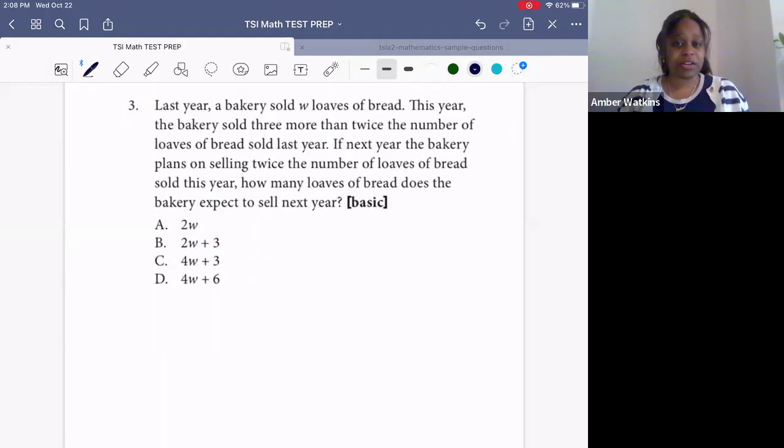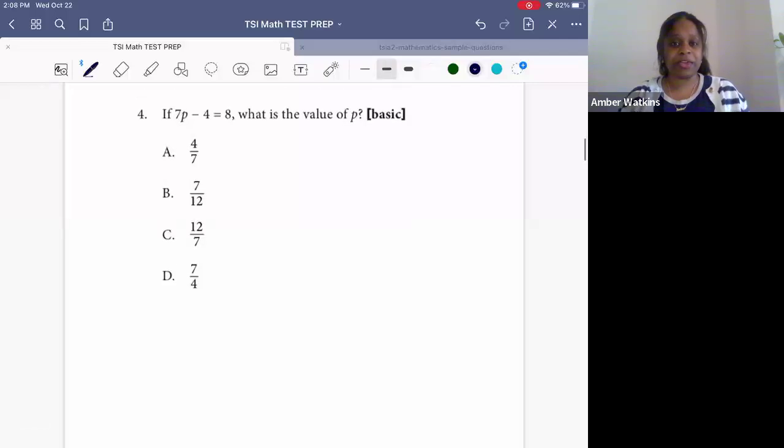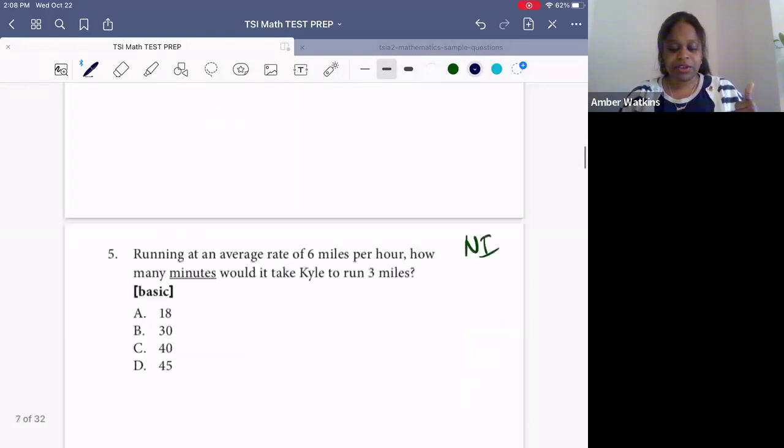If you're looking at a practice test that has this question on it, this is no longer part of the official practice test. The second one, this one is still on it. You still need to learn how to do bar graphs. Number three, this one is still on it, asking you to put together different binomials or expressions and multiply them. Question number four, solving for a variable, is still on the test.